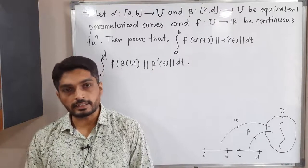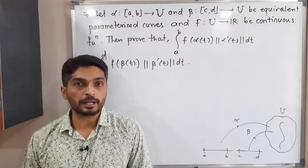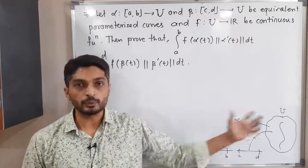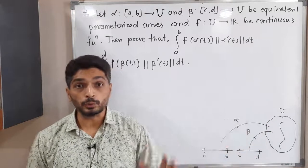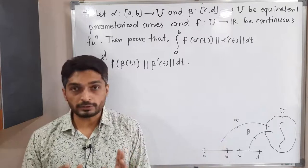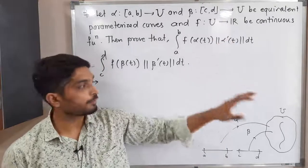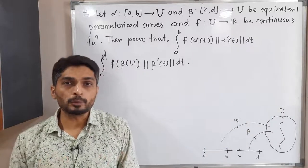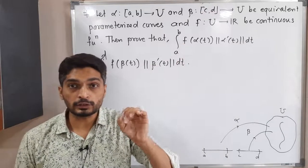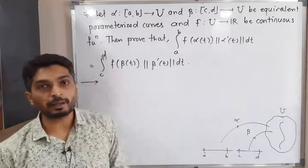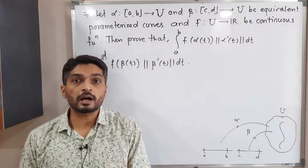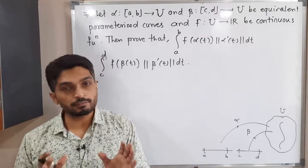Let us discuss this result. We have two equivalent parameterized curves alpha and beta, where alpha is defined from closed interval [A,B] to U and beta is defined from closed interval [C,D] to U, where U is any open subset of R^n. We have F as any continuous function defined from U to R. We have to prove that the value of the line integral of F with parameterization alpha is the same as with parameterization beta, because alpha and beta are equivalent parameterized curves.